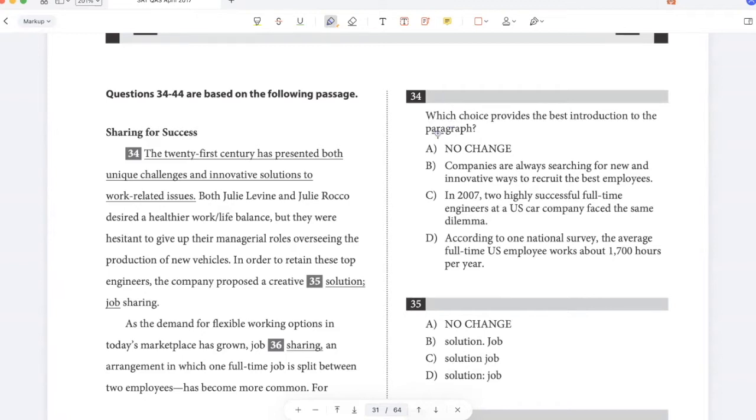Okay, so which choice provides the best introduction to the paragraph? If you read the first line, it says the 21st century has presented challenges and solutions. And then I'm talking about Julie Levine and Julie Rocco, and I have not introduced them, right? So I have no idea who these two are. I'm only saying that they wanted a healthier work-life balance, but they were hesitant to give up their managerial roles. So the way this is written is not good because it doesn't introduce them.